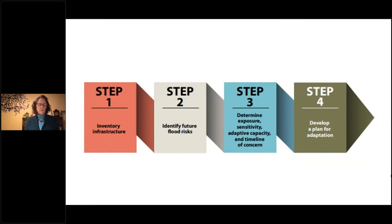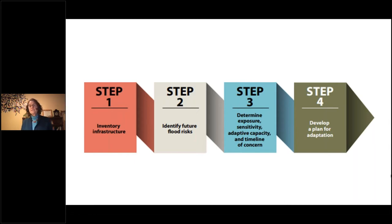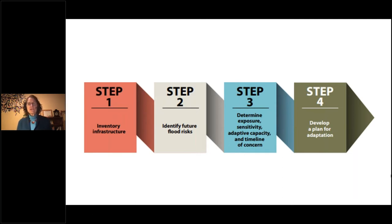The Planning Advisory Report identifies four steps that can be included in the CIP process, which will look familiar to adaptation specialists: you inventory your infrastructure, identify your future risk, determine your exposure, sensitivity, adaptive capacity and timelines of concern, and then you create your plan — all in the context of an infrastructure planning process. The report goes into quite a bit of detail about each of these steps, including tools, regulations, and how planners can be engaged in infrastructure project processes while addressing sea level rise.